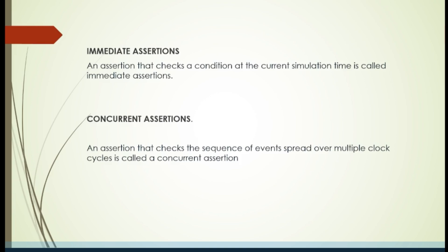From the name itself you can say that in an immediate assertion, the condition is checked at the current simulation time — at that particular time the assertion is checked. Immediate assertion is very similar to if-else conditions. Just like an if-else block is executed in the active region — if the condition is true the if block runs, if false the else block runs — immediate assertions are also checked at the current simulation time itself.